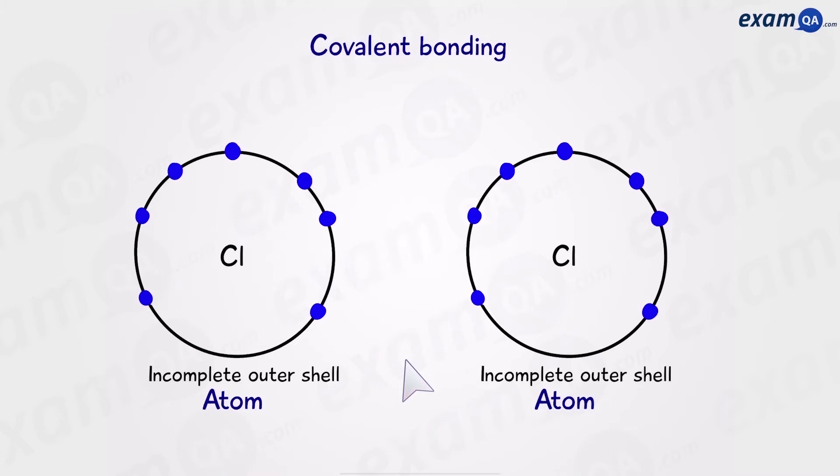Now first of all, we're going to draw the outer shells only because that's where most of the chemistry happens. Now chlorine is in group 7, so it has 7 electrons in its outer shell. Next, we're going to draw the one on the left with crosses. This is important so that we know which atom the electrons are coming from when we draw our diagram.